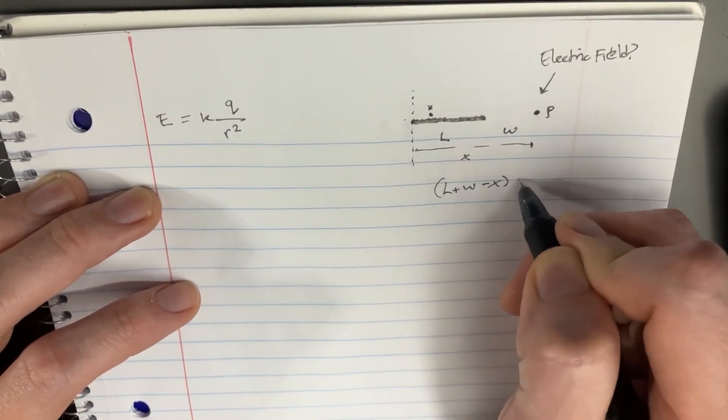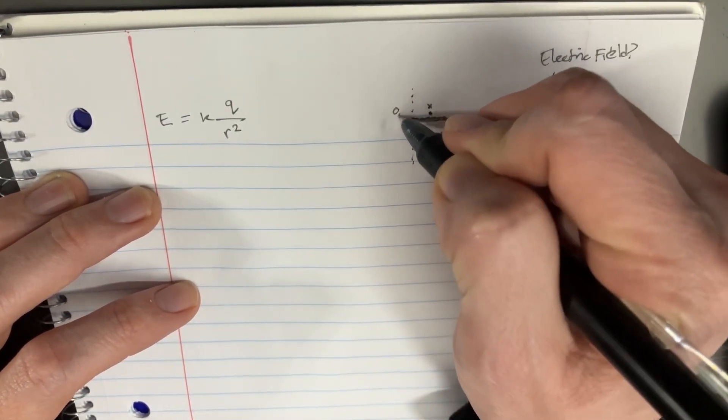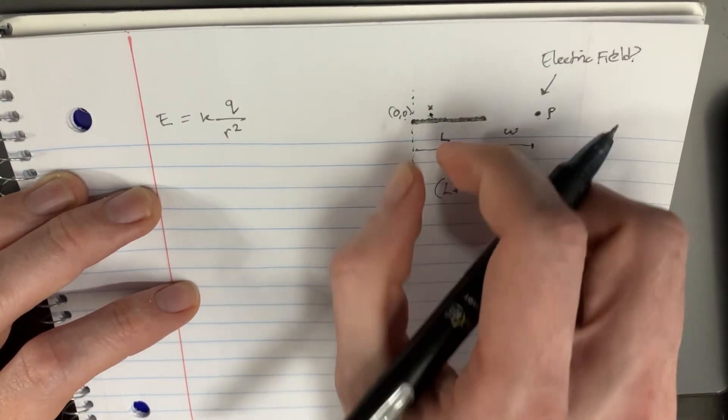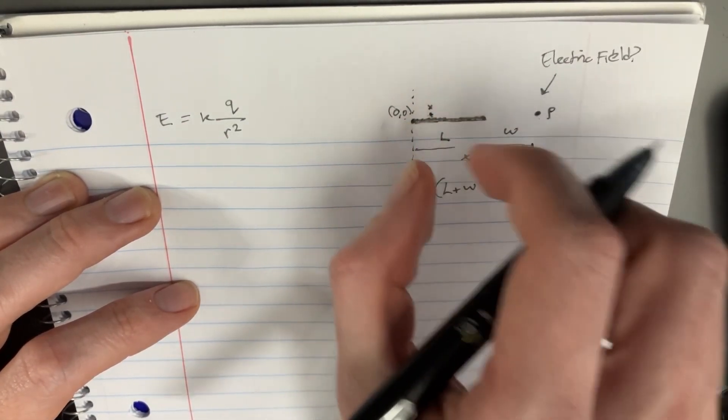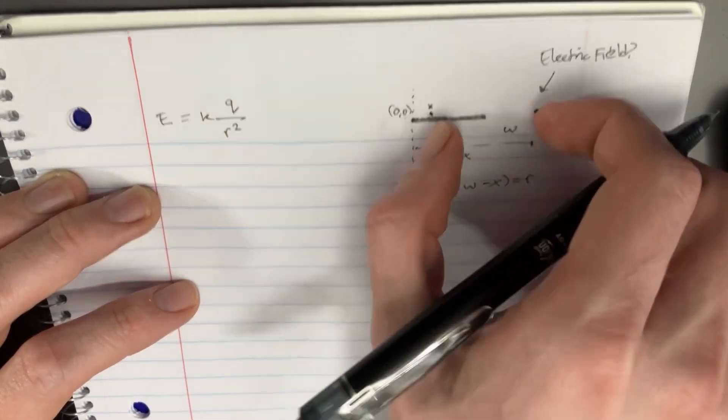And that's what you would get for R, if you were to define this as a zero point, okay? So it's not going to be X as far as the distances, because that's just going to be that. So it's going to be L plus W minus X, and then that's going to be your R.